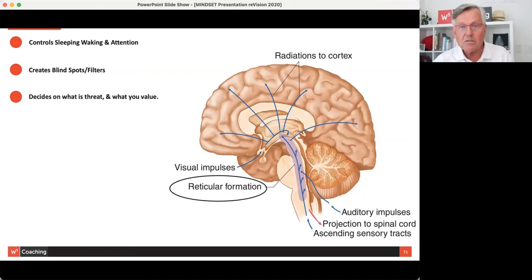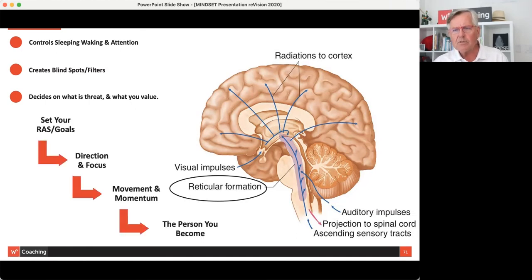So the reticular decides what's a threat, what you value. So when you set goals, you're activating your reticular system. And what that means is, as you write goals, as you write your 'I am' statements, the brain starts to pay attention to all the things and influences in your environment that help you achieve those things.